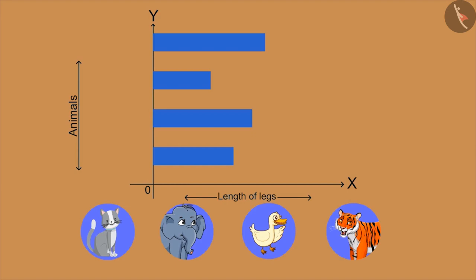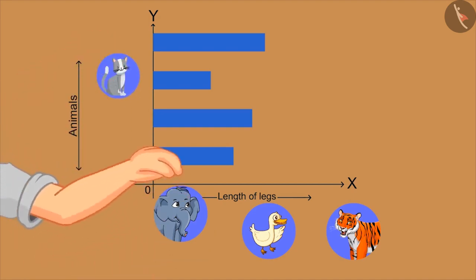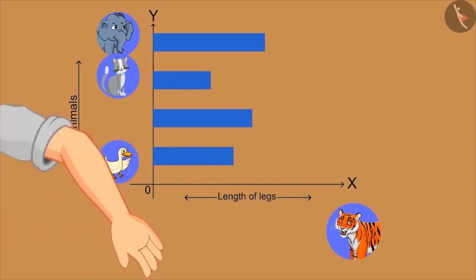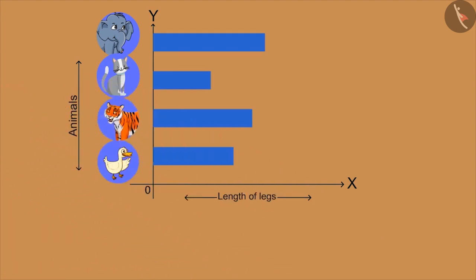Brother, let me do first! Yes, yes, very good! This one is of elephant! Very good! And this one is of duck! Great! This is of tiger!